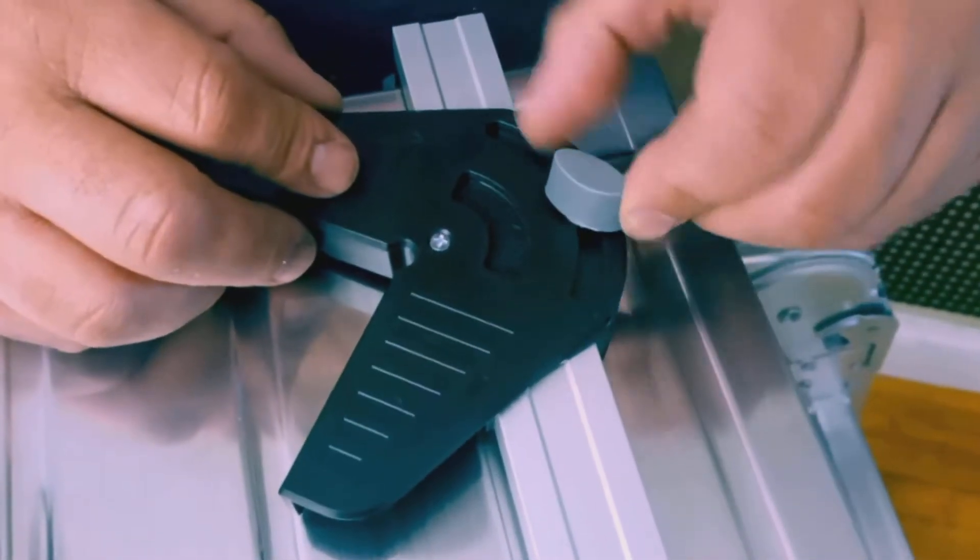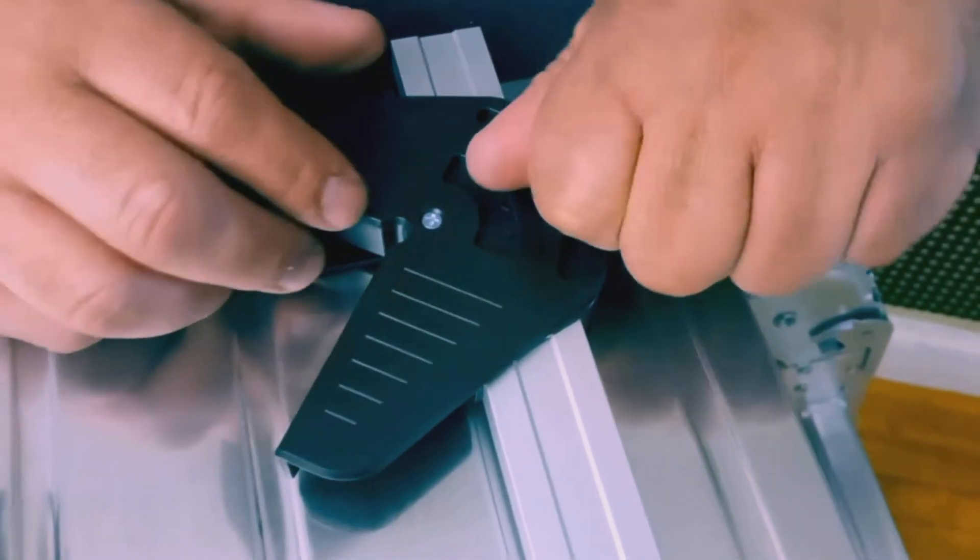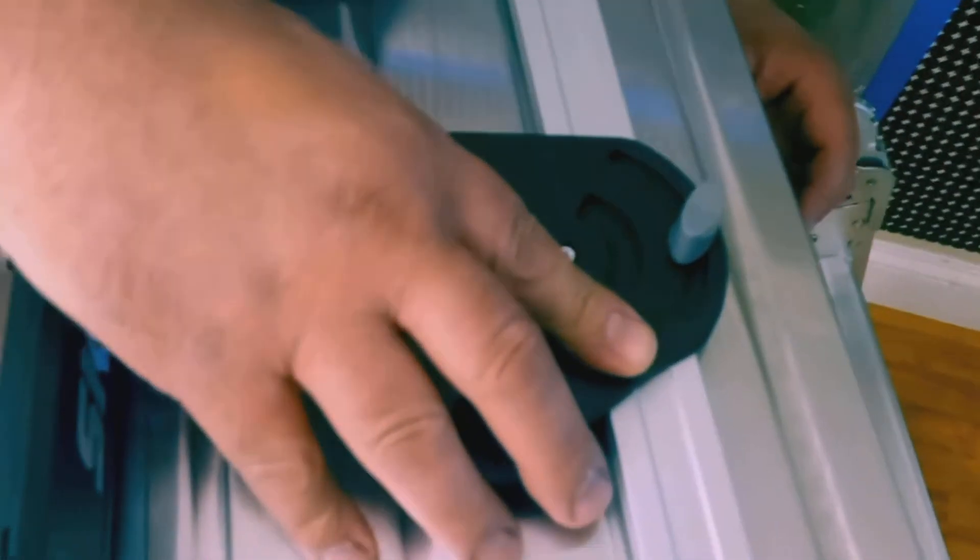And once you set it you just lock it by tightening the knob on top and that's it. I'm not really sure this is supposed to move like this, I don't see a way of locking it in place. Alright, that's basically it for the machine itself.